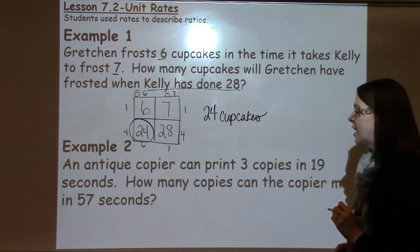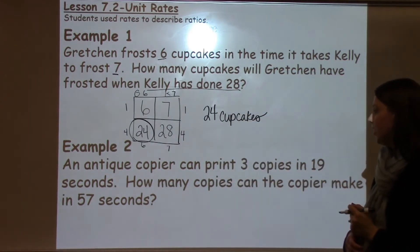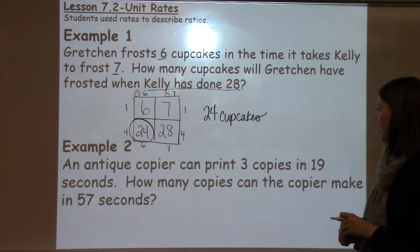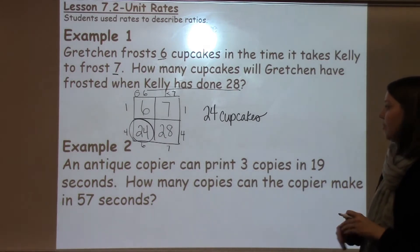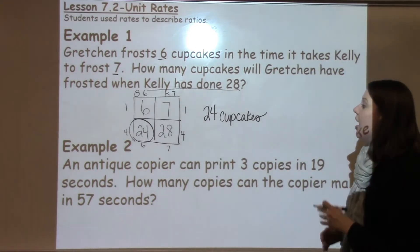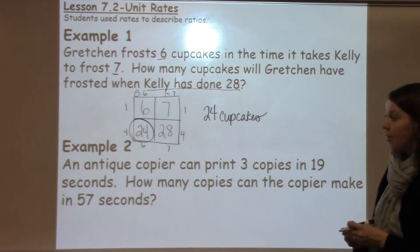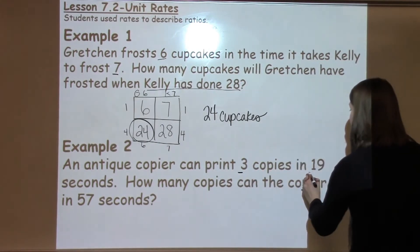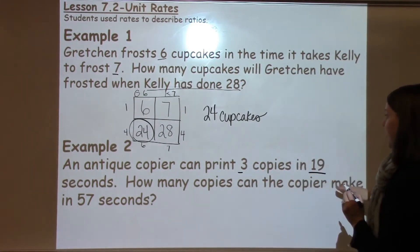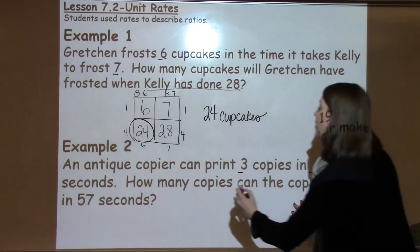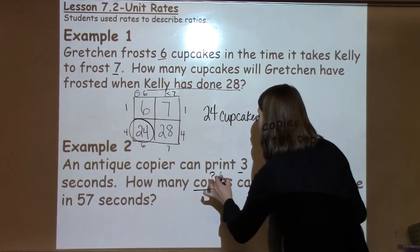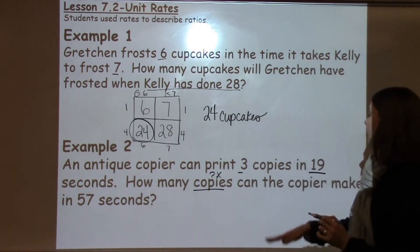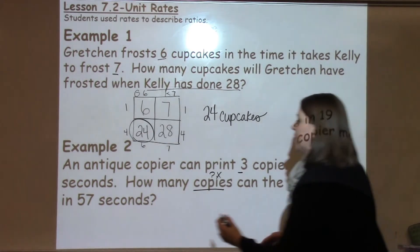Moving into question number 2. An antique copier can print 3 copies in 19 seconds. How many copies can the copier make in 57 seconds? As I was reading this, I heard some important information: 3 copies in 19 seconds, and I want to figure out how many copies — this is my missing number or x value — in 57 seconds.